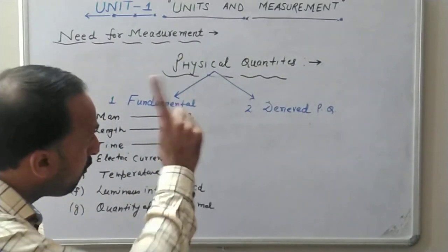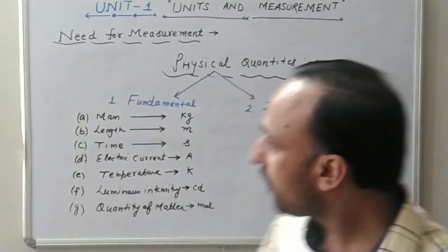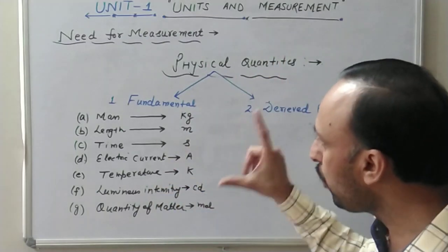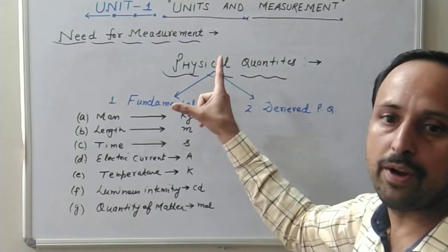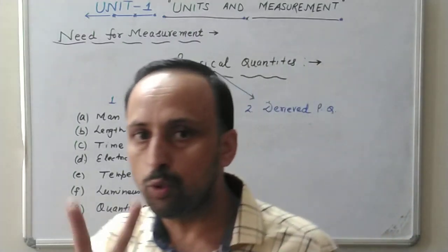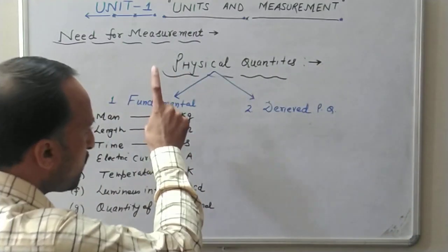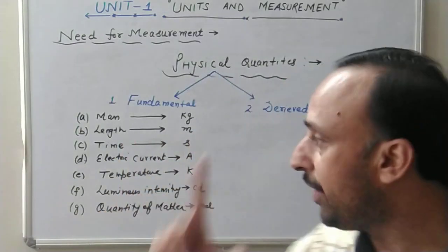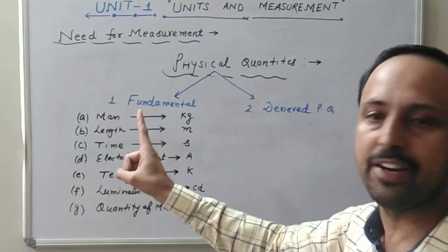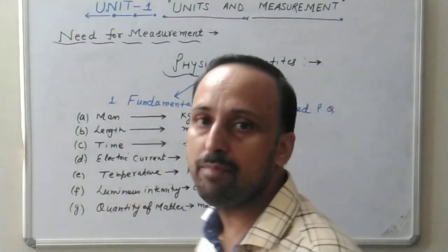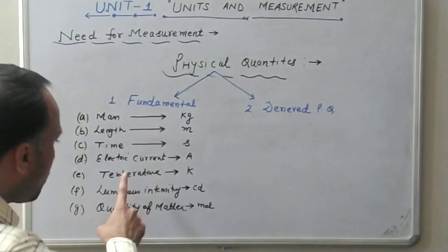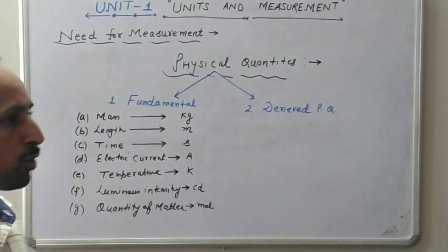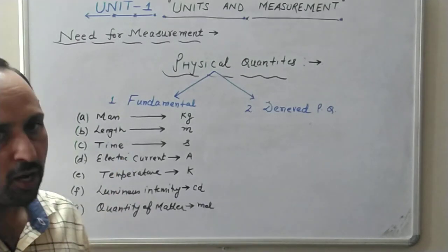So to summarize: quantities which can be measured directly or indirectly are known as physical quantities. Physical quantities are further classified into two types — fundamental and derived. The fundamental physical quantities are seven: mass, length, time, electric current, temperature, luminous intensity, and quantity of matter. Their corresponding units are called fundamental units.